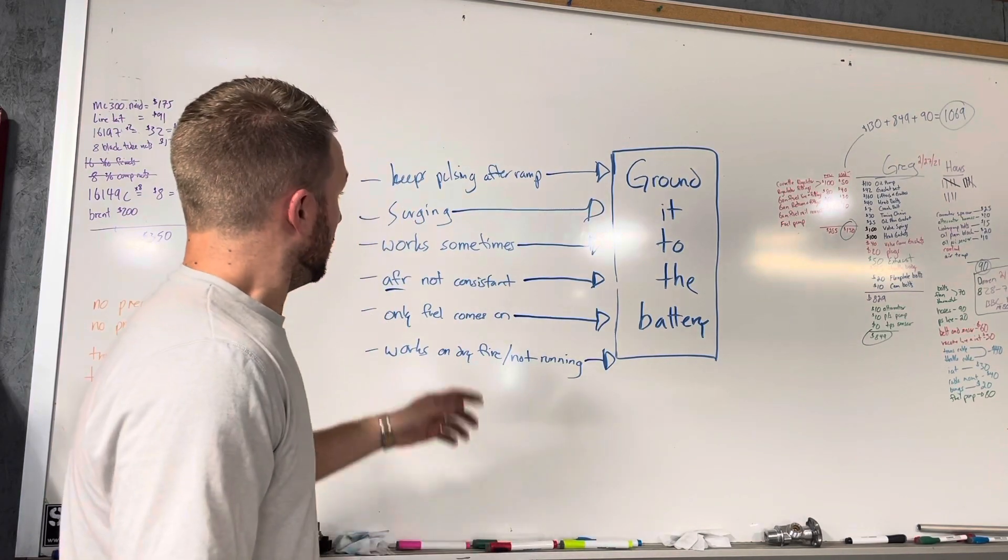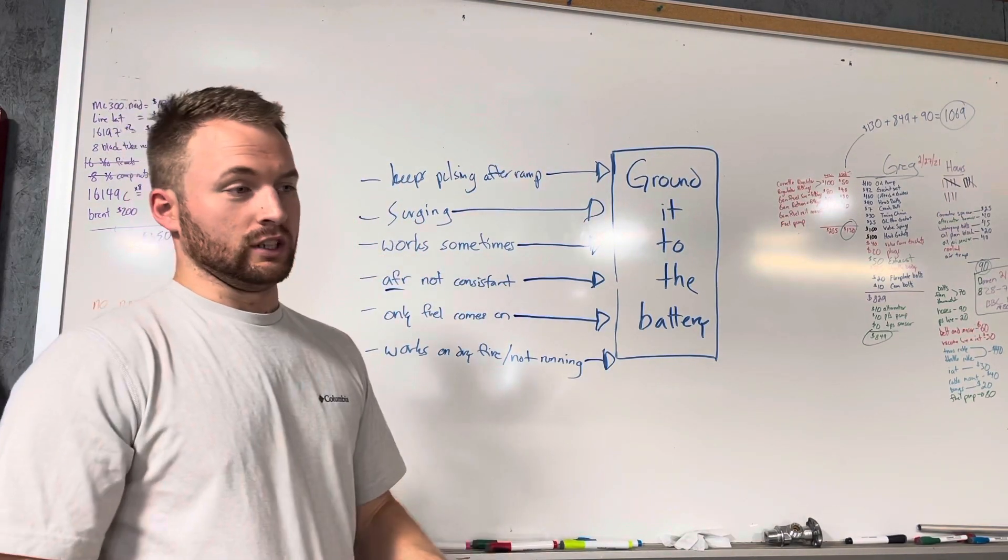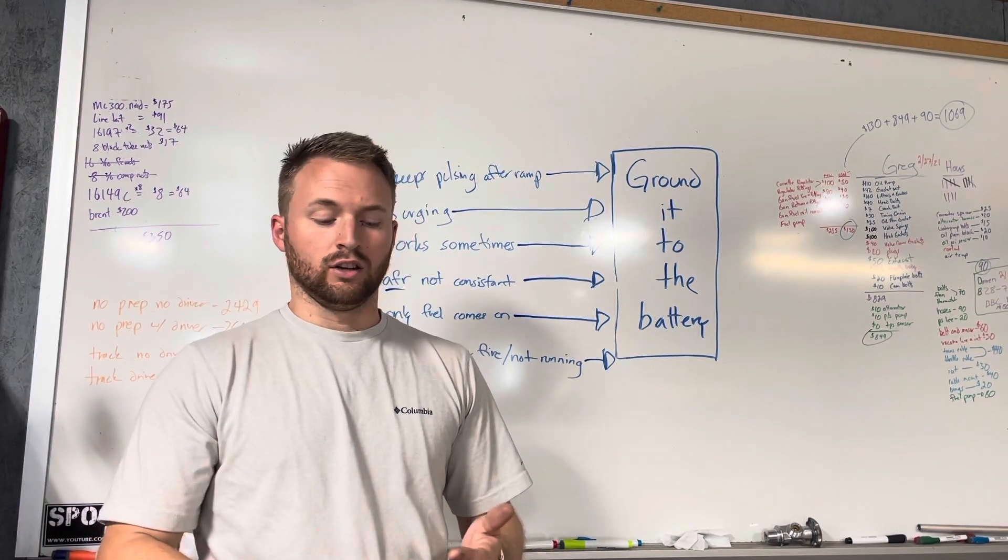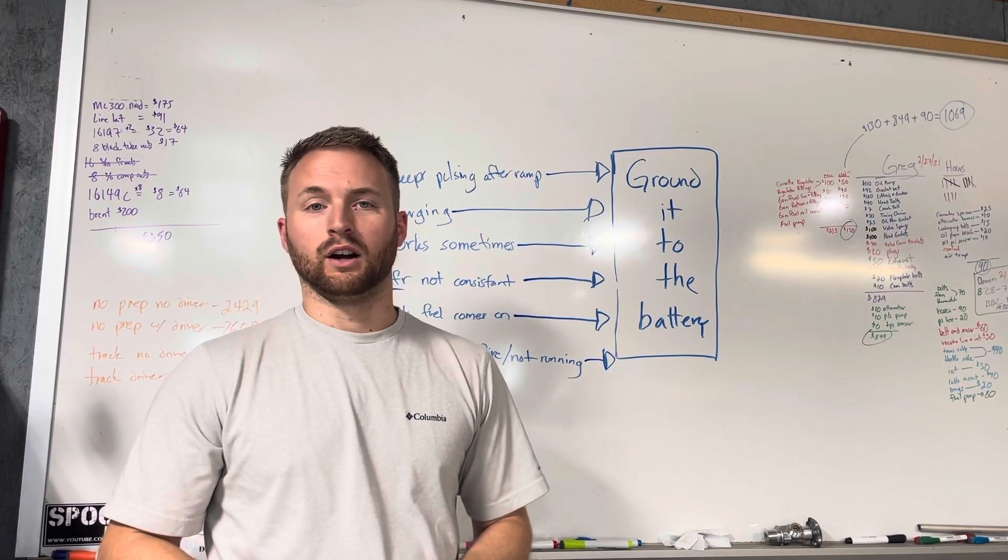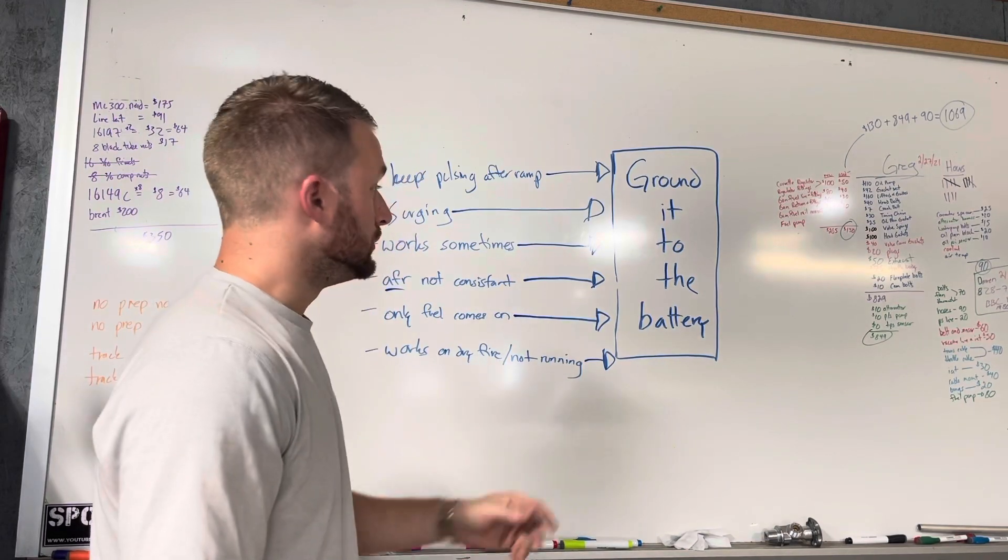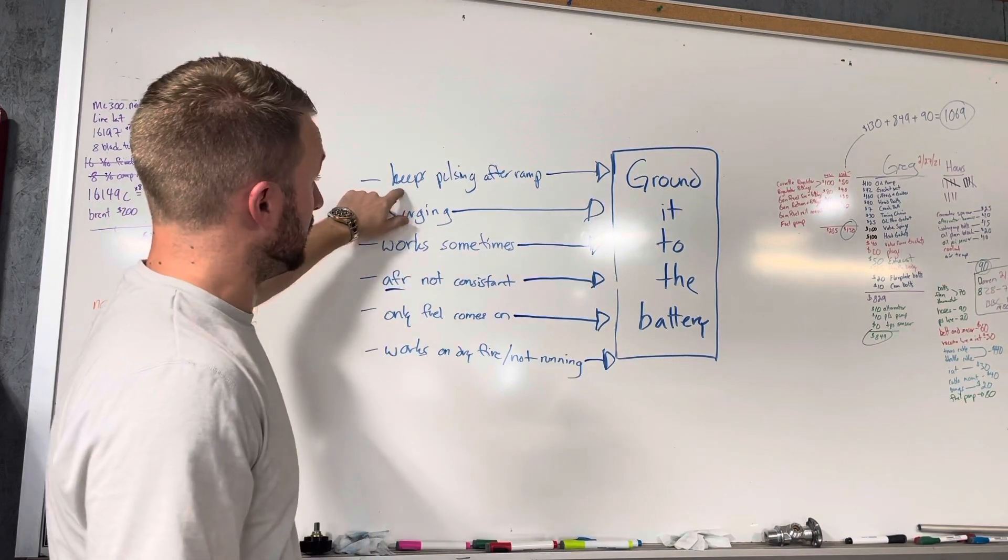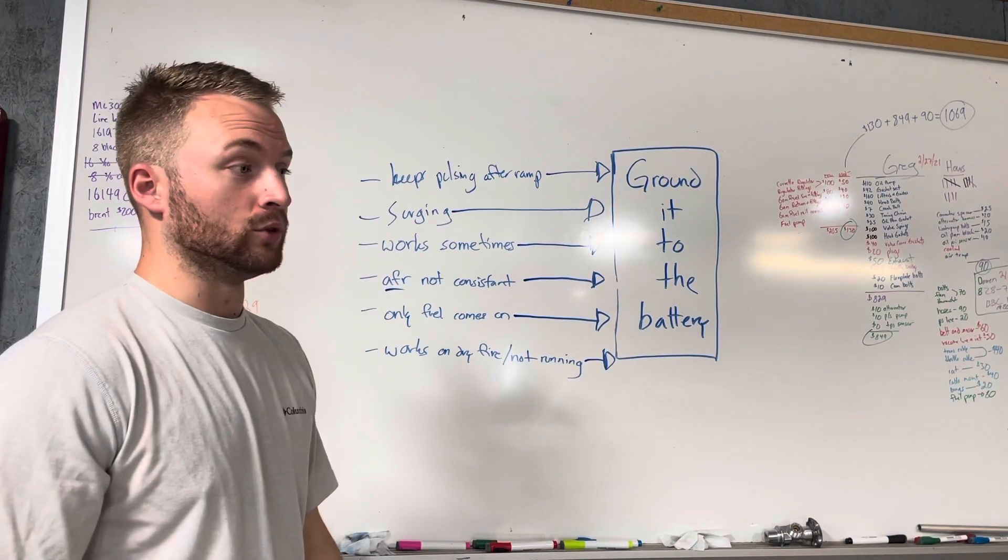If you're going down the track and it's surging and you check the wide open throttle, you check your TPS settings, you check all the other settings and you can't figure out why it keeps surging, you should ground it directly to the battery. That's due to this because one of them will keep pulsing or one of them won't.